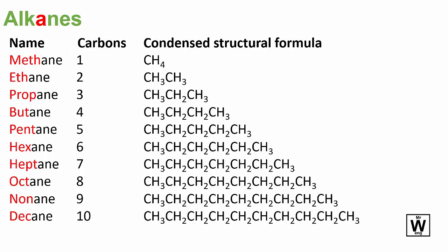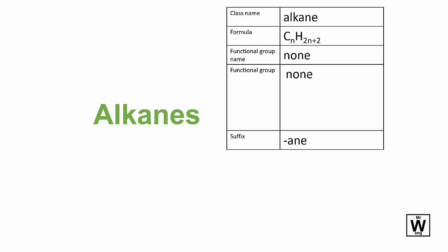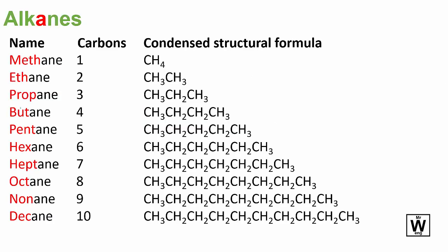This is the first of the functional group slides, and this one is actually the only one that isn't a functional group — there's no functional group name listed. We'll normally use the homologous series name for it. The most important thing first is the stems you need to know: one is meth, two eth, three prop, four but, five pent, six hex, seven hept, eight oct, nine non, and ten dec. There are memory aids like decade and octopus for some of them, but others you'll just have to memorize.